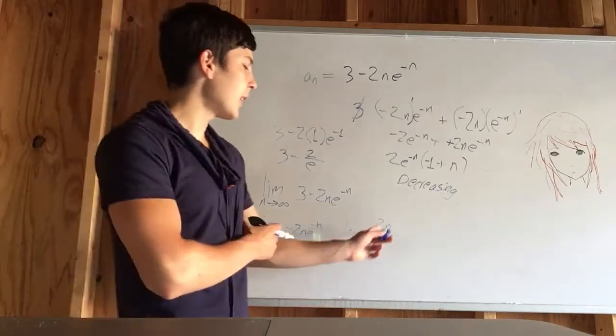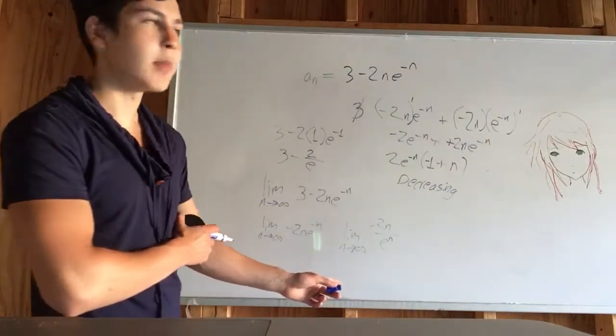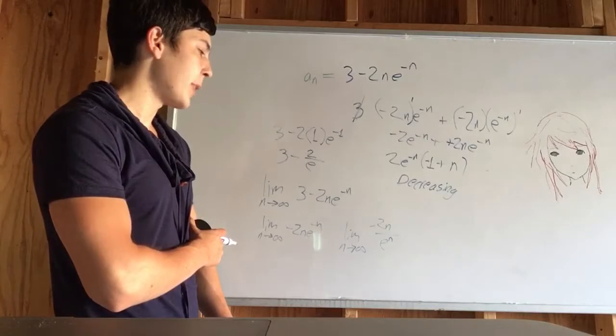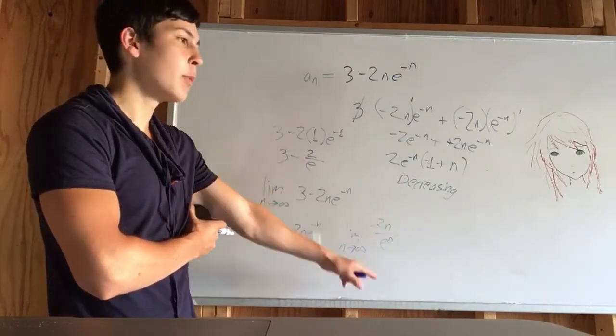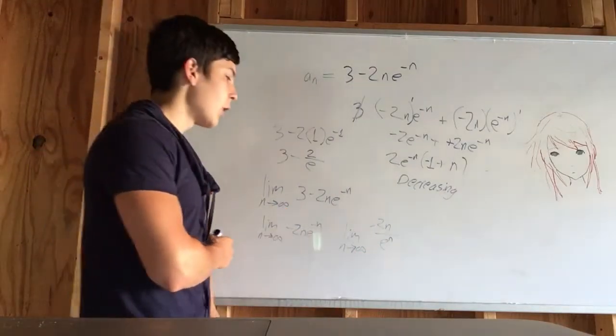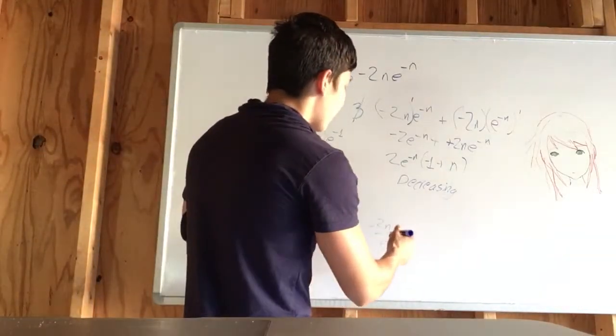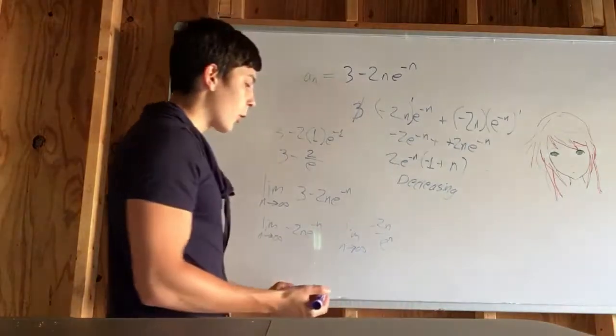And we've got infinity in the numerator, infinity in the denominator. We can apply L'Hopital's Rule. L'Hopital's Rule tells us that we can take the derivative of the numerator and the derivative of the denominator when we have infinity over infinity, which we do, or when we have 0 over 0.